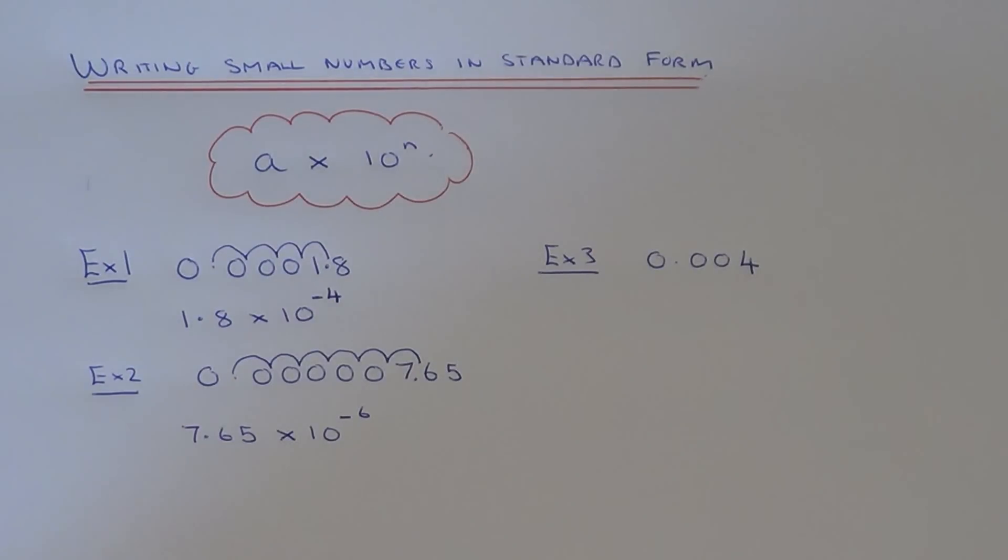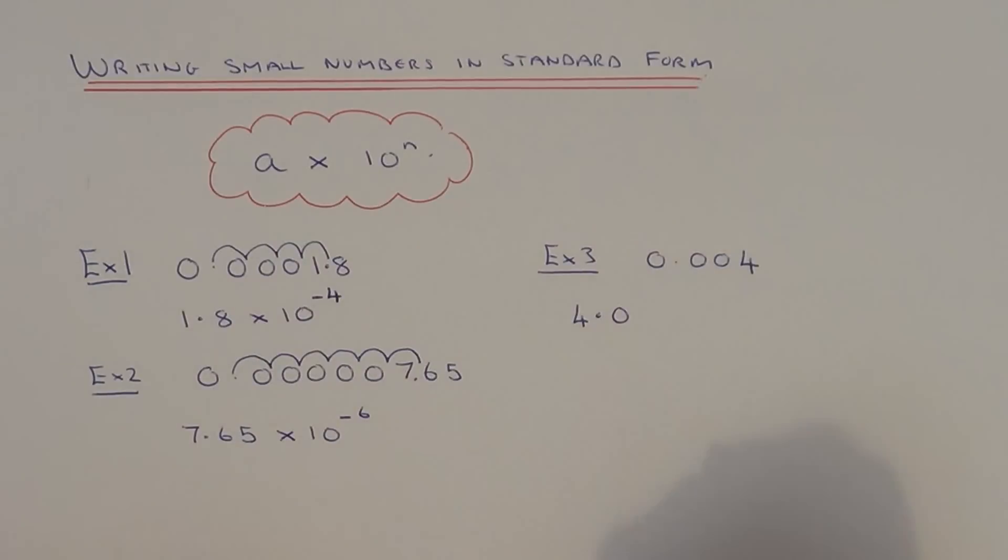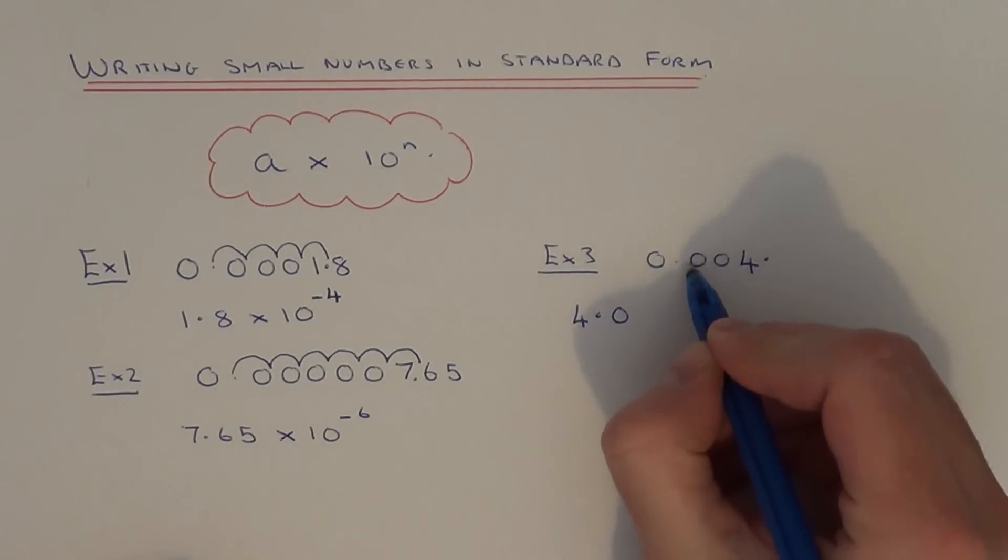And our final example, example 3. This time we've got 0.004. So again, your first number has to be between 1 and 10, so we're going to write this as 4.0, or you could just put 4 if you like. We've put the decimal point here. So how many places is it being moved?